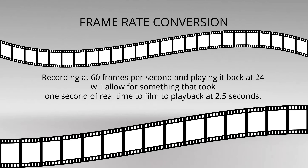Slow motion video is created through over-cranking. All this means is that you capture more frames than you need, allowing you to slow it down and still fit it into a cinematic frame rate. For example, recording at 60 frames per second and playing it back at 24 will allow for something that took one second of real time to film to play back at two and a half seconds.